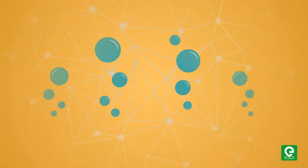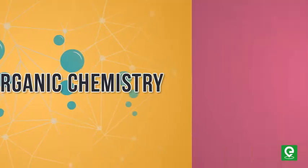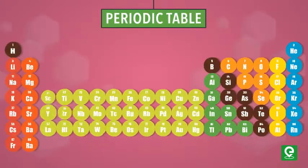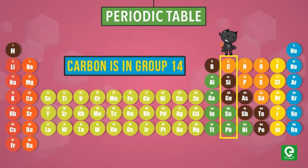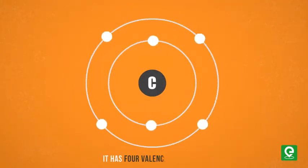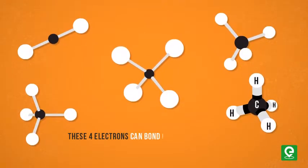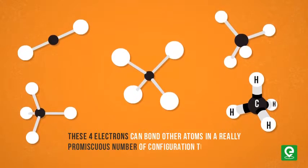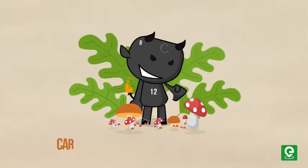This discovery is considered the starting point of modern organic chemistry. So what makes carbon so special? Carbon is in group 14 of the periodic table, and like all elements in that group, it has four valence electrons. These four electrons can bond other atoms in a really large number of configurations to form all kinds of structures.